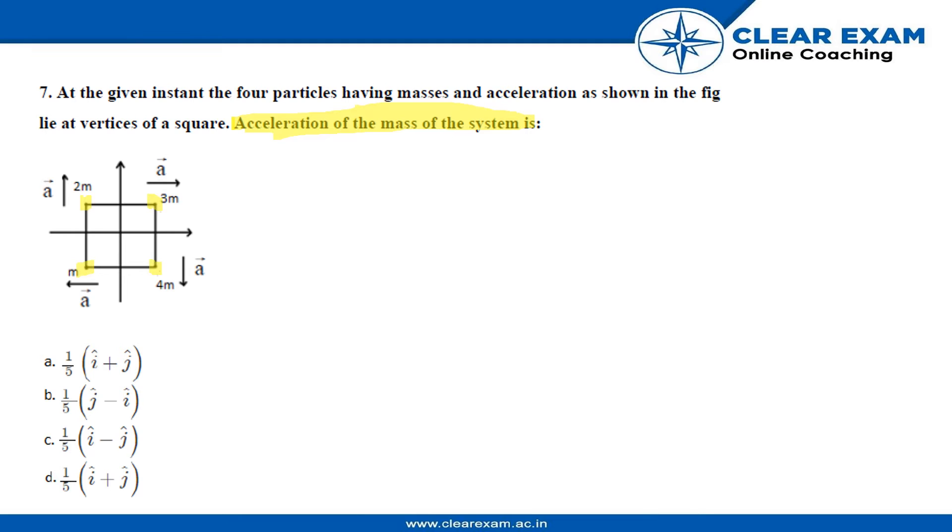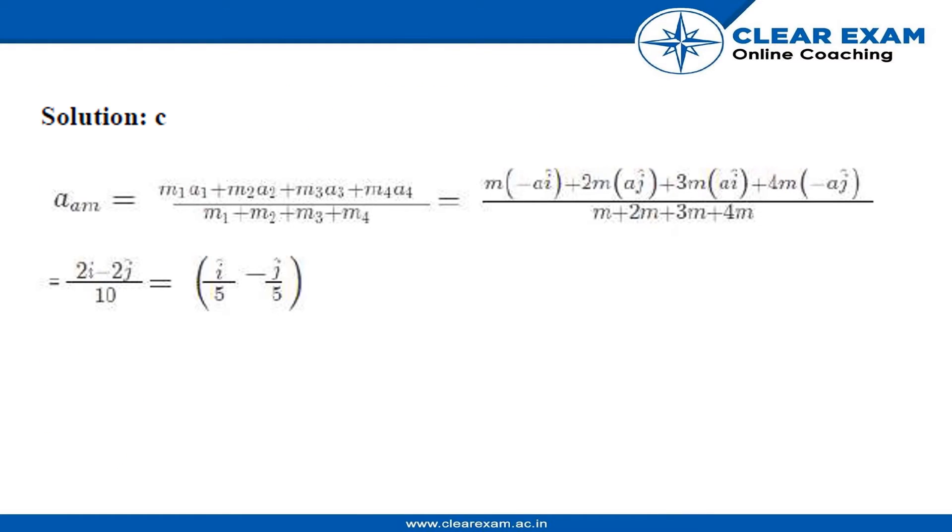For finding out the solution, we will use this simple formula: m1 a1 plus m2 a2 plus m3 a3 plus m4 a4 divided by m1 plus m2 plus m3 plus m4, basically summation of mi ai divided by summation of mi.